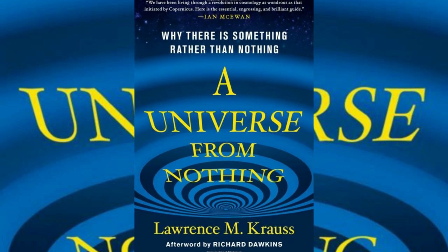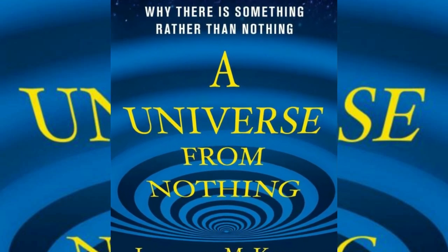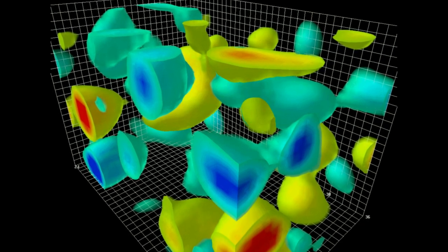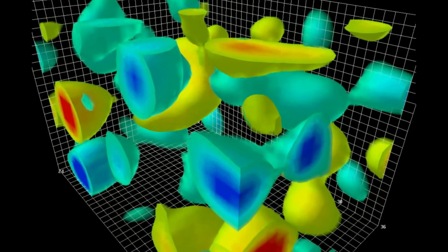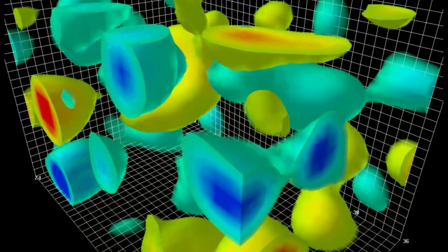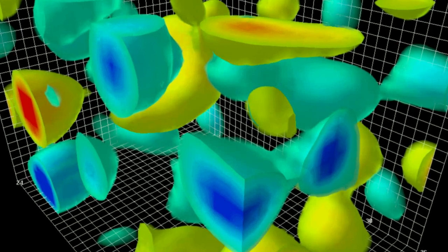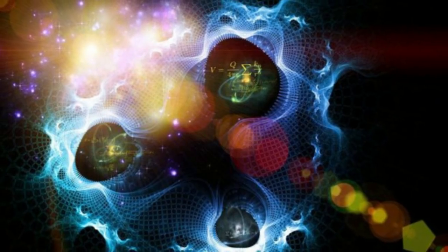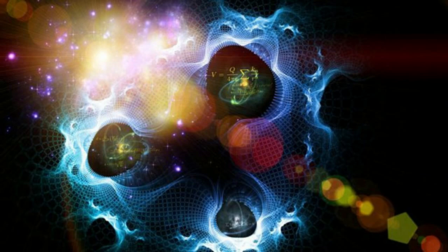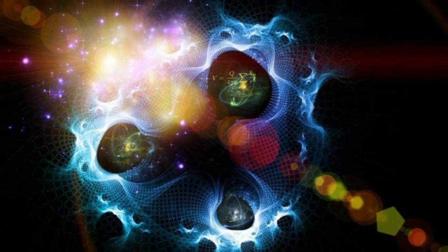He later expanded on these ideas in his book, A Universe from Nothing. His ideas were predicated upon the fact that at the quantum level, even a perfect vacuum was not completely empty. There were still tiny energy fluctuations that, however detectable, averaged out to zero. From here, Krauss was able to extrapolate that even such a small fluctuation in energy could manifest an entire universe.